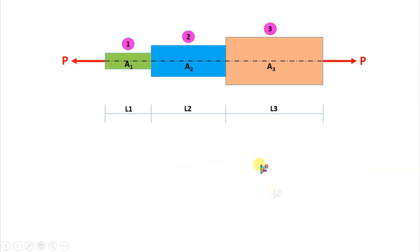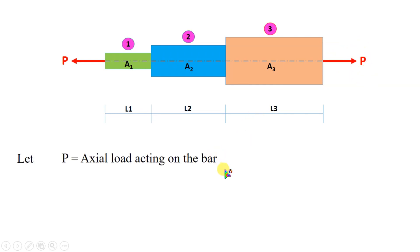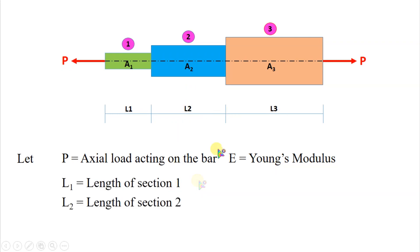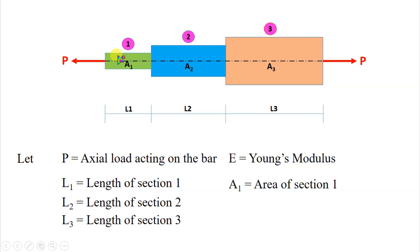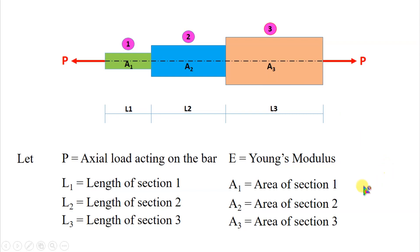Here in this diagram, you can clearly see that it is a bar with various sections 1, 2 and 3, of different sizes. This particular bar is given a tensile load P acting on both sides. Let P be your axial load acting on the bar. E is your Young's modulus. L1, L2, and L3 are the lengths of sections 1, 2, and 3. A1, A2, and A3 are the areas of sections 1, 2, and 3. Based on these details, let us see what are the stresses, strains, and the change in length acting on that particular bar with varying sections.